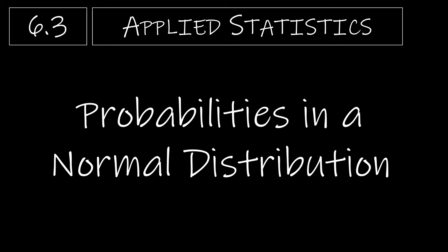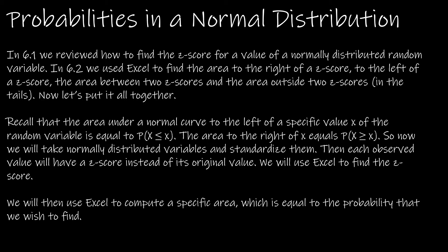This is section 6.3, and we are going to take a look at probabilities in a normal distribution. In 6.1, we reviewed how to find a z-score given the mean and the standard deviation of a normally distributed random variable. In 6.2, we were given a z-score and used Excel to find the area to the right, to the left, between two scores, or in the tails. So essentially what we're going to do now is do all of that at the same time — find a z-score and then use Excel to find the indicated area.